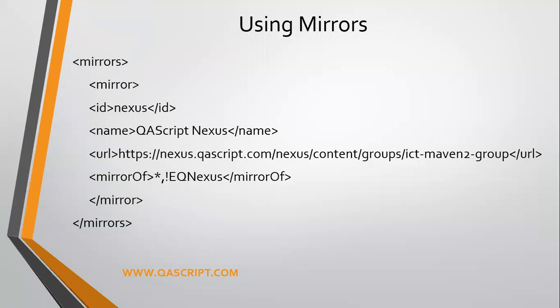Let's talk about mirrors and how you can use them in Maven. If you have ever downloaded any particular setup or file from the internet, you must have seen mirror links. In my first video, when setting up Maven or downloading it from the Maven official website, I showed you there are some mirror links. Those are basically optional URLs which you can use when a particular URL is not working. Similarly, for your repository, if you want to have an optional URL...